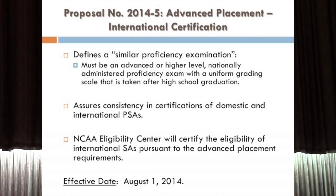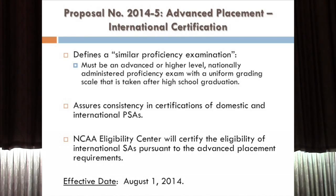This particular proposal ensures that exception has a similar application for international students. It did two things: it defined what a similar proficiency examination is — essentially it must be administered on a national scale, have a uniform grading scale, and be taken after high school graduation. The certification, previously your campus's responsibility, will now be done by the eligibility center. Division I adopted this exception three or four years ago; the eligibility center reports that only one student has ever used it, since students with that much advanced credit are usually already meeting general initial eligibility requirements.